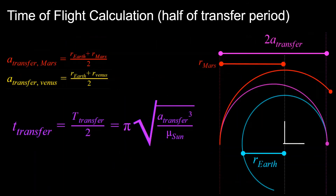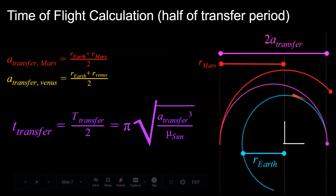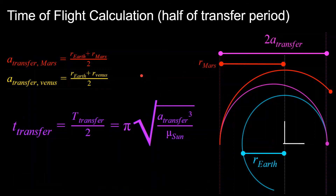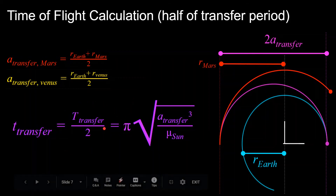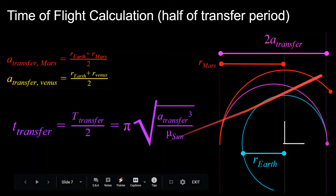The time of flight of the spacecraft to get from one planet to another is equal to half of the transfer orbit period. You can see this intuitively in the diagram — the transfer orbit goes through half of its period, starting here, going 180 degrees in true anomaly, and ending over at the destination. Since we know the semi-major axis of the transfer orbit, we calculate the period and divide by 2. That's equal to pi times the square root of the semi-major axis cubed over the gravitational parameter of the Sun.